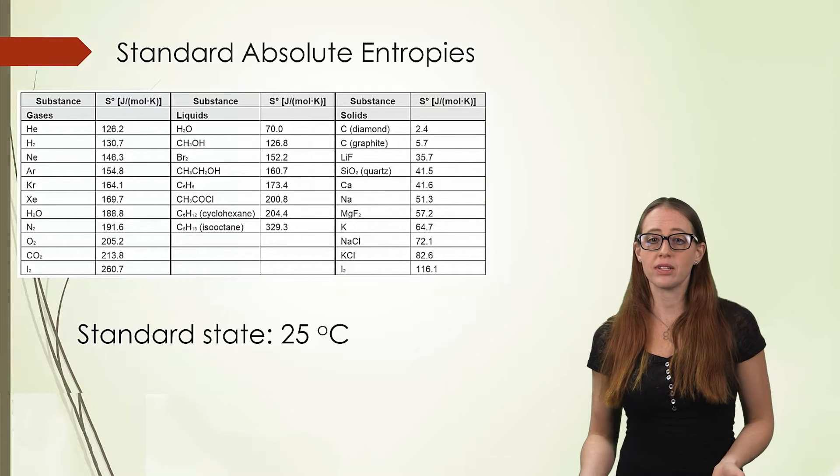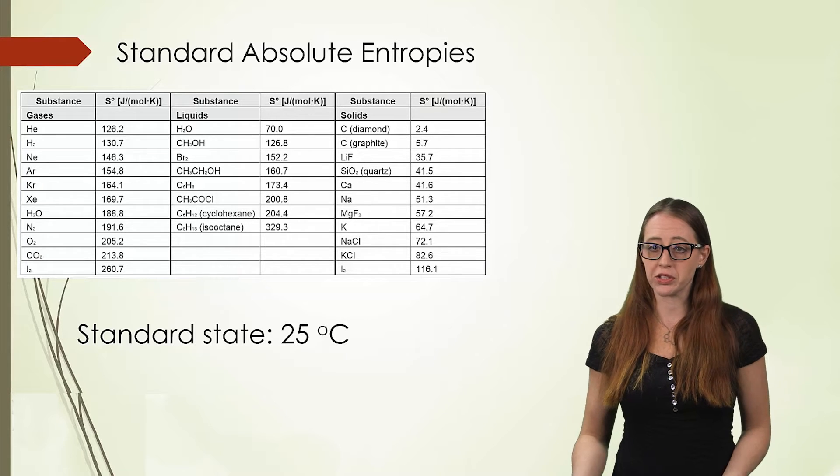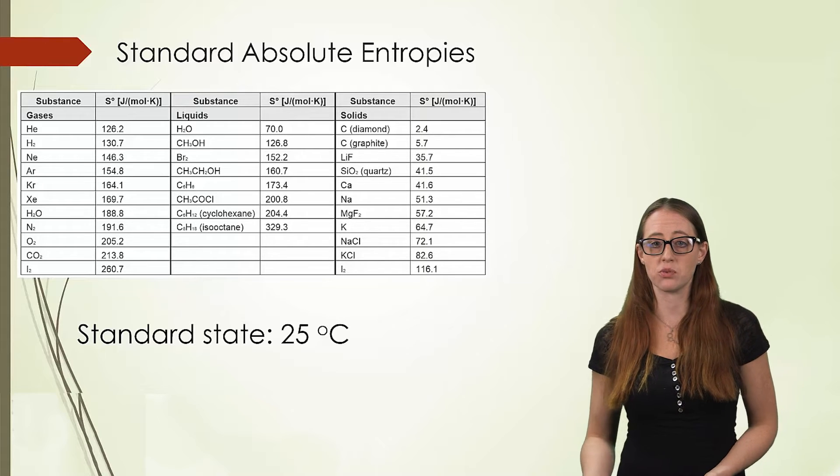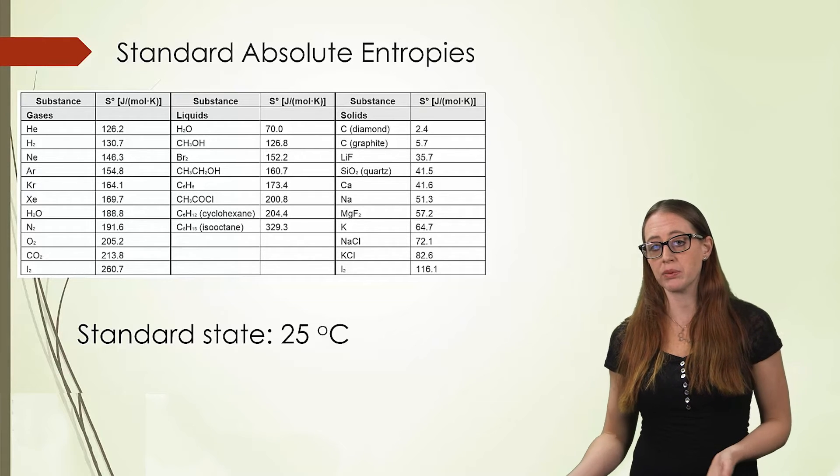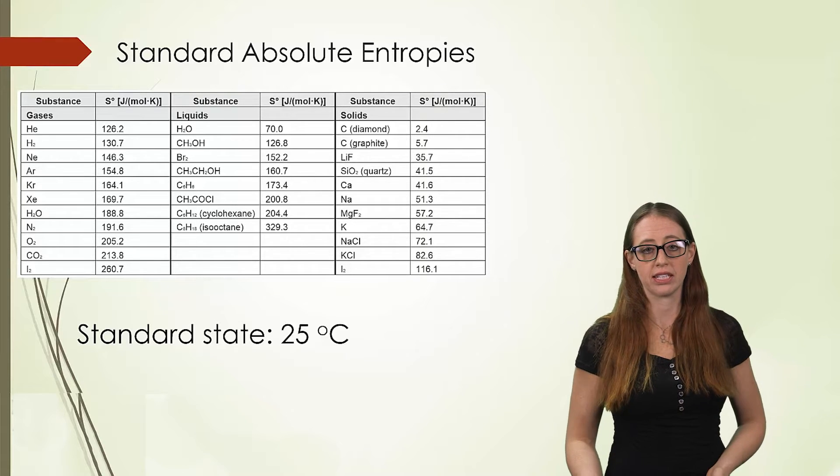We can use these values to calculate the differences in entropy through chemical reactions. Though we can always look these values up, it's important to be able to have a sense for when entropy increases or decreases, so we are going to talk about relative entropies as well, so that you could tell whether a reaction goes up or down in entropy without necessarily having to calculate the value.